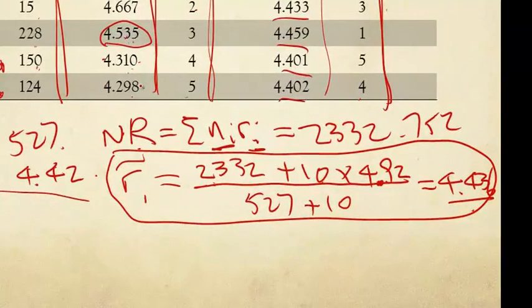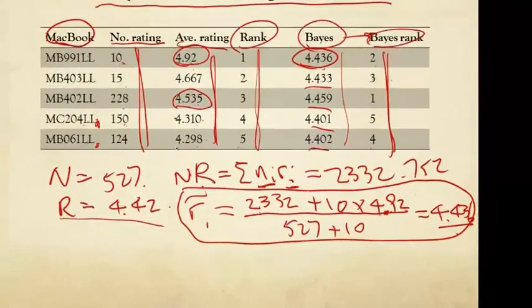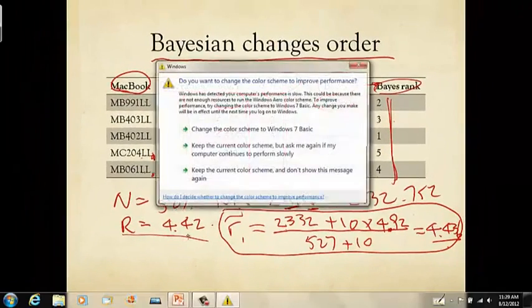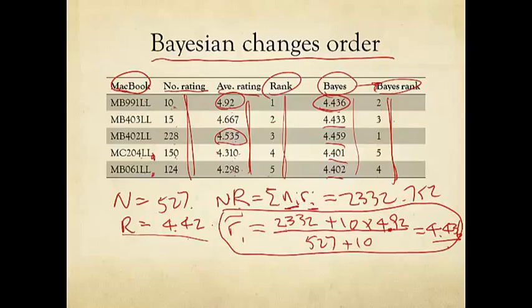Well, the main thing is that because both of their simple naive average rating is below the big R, 4.42. So for those kind of products, if you actually have a fewer number of ratings, then we trust the average more than your own average, and that's why it pulled up closer than this product to the total average, 4.42.